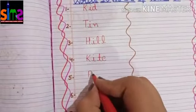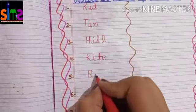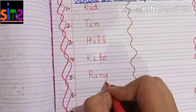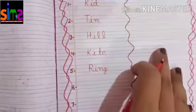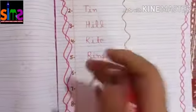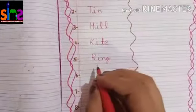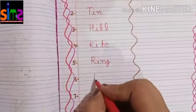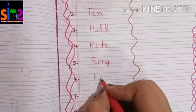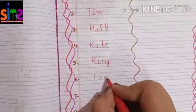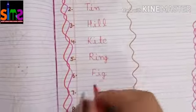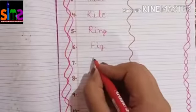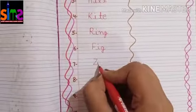On fifth number you all will write RING. On sixth number you all will write FIG. On seventh number you all will write ZIP.